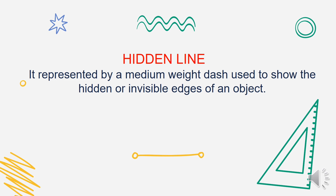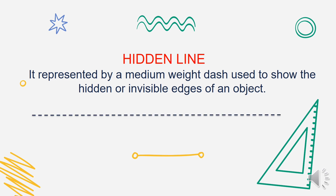Next is the hidden line. It is represented by a medium weight dash used to show the hidden or invisible edges of an object. It is used to show the hidden or the invisible edges — mga edges na hindi nakikita — and that is what the hidden line represents.